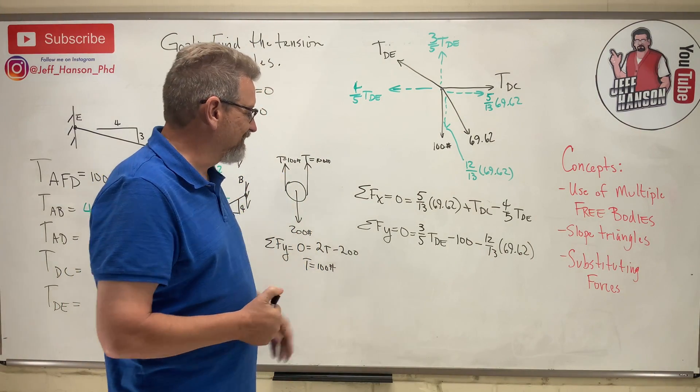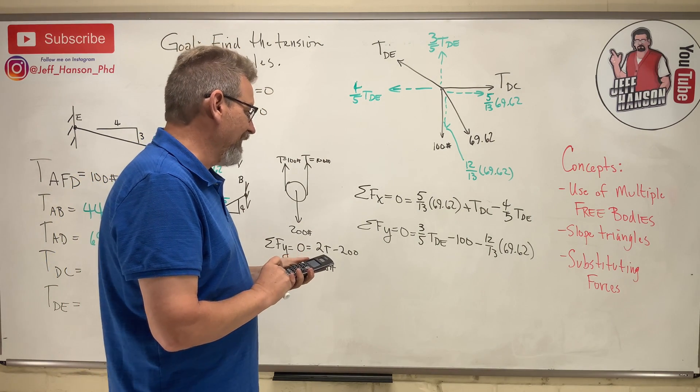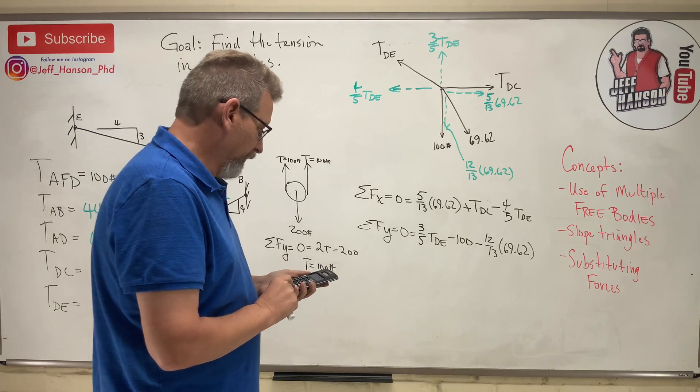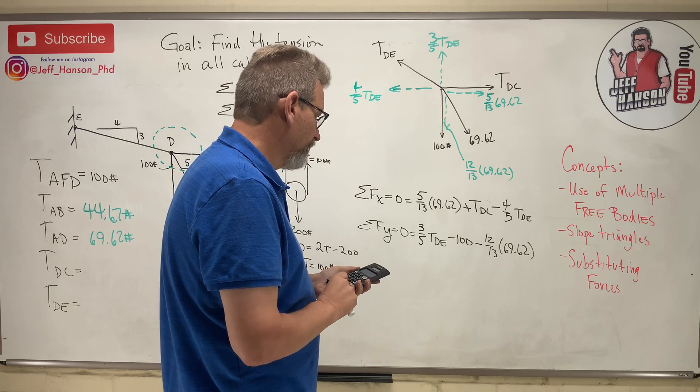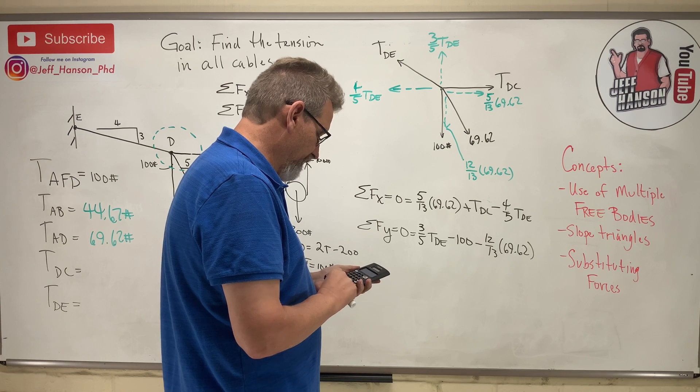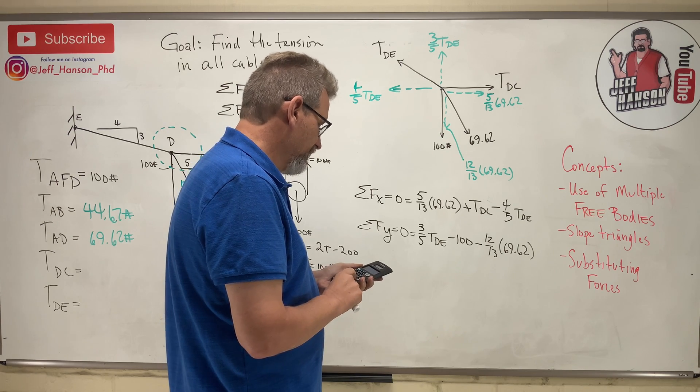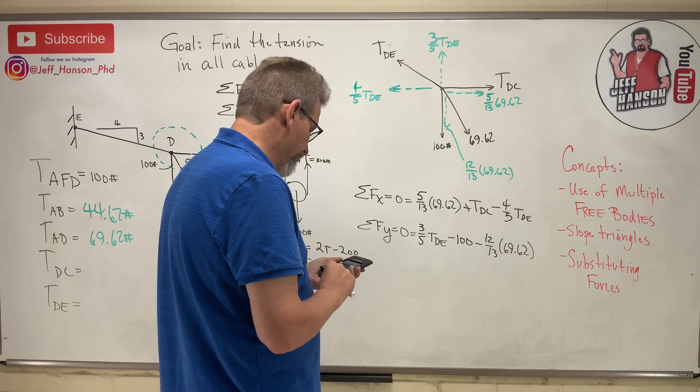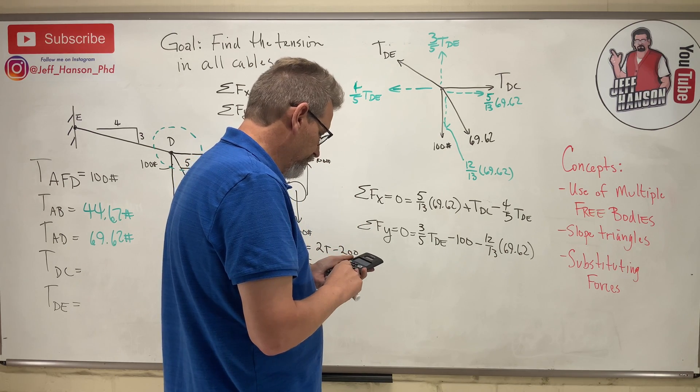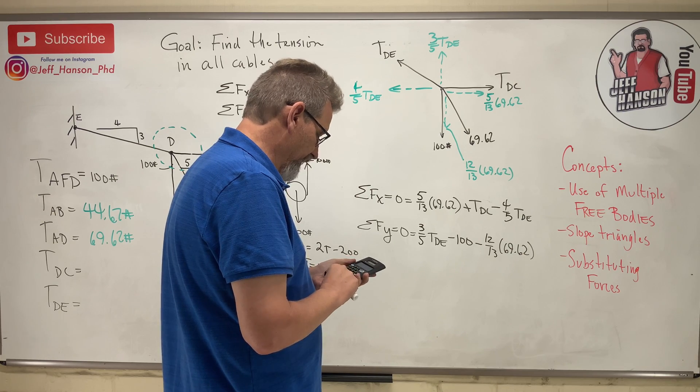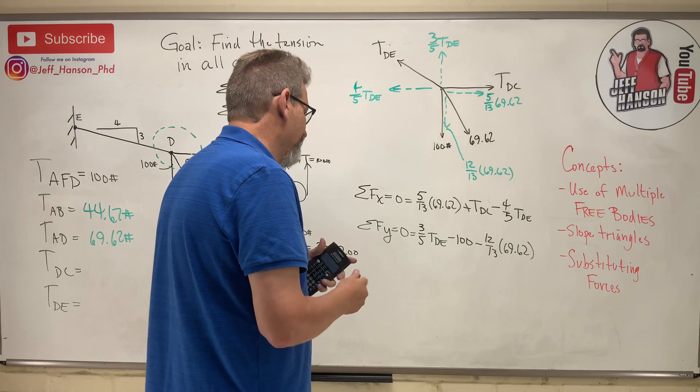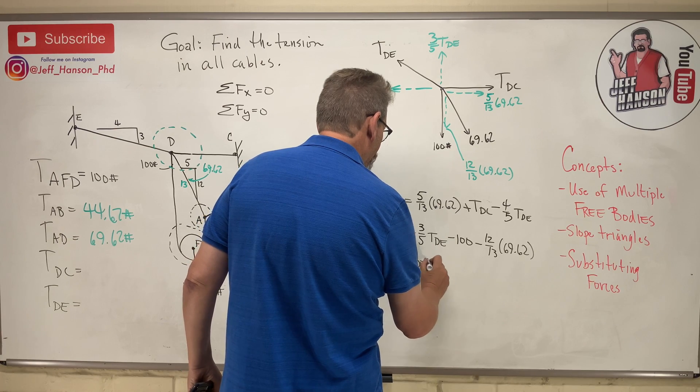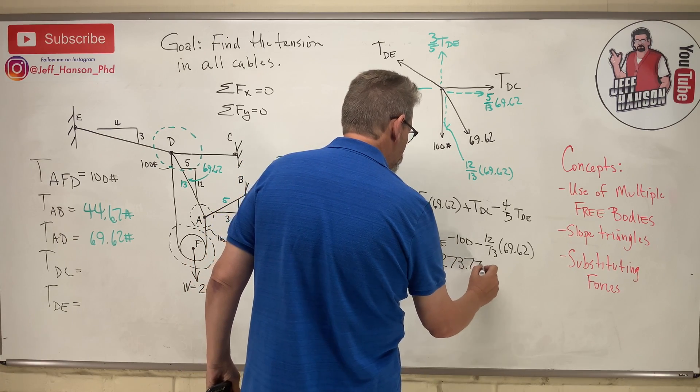So, here we go. 100 plus, I'm going to do that differently. 12 divided by 13 equals times 69.62 equals, that's 64.26. Add that to 100 plus 100. And then multiply that by 5. And then divide that by 3. And you get 273.77. So, TDE is 273.77 pounds.